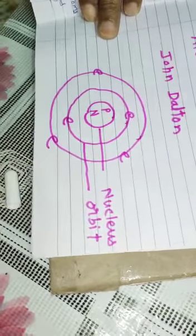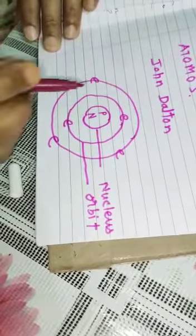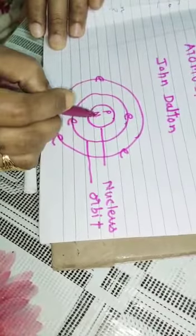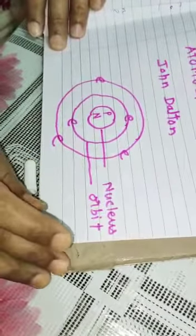So atom consists of three subatomic particles. In the nucleus, protons and neutrons, and in an orbit, electrons.